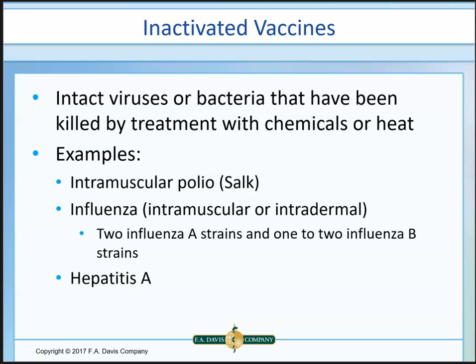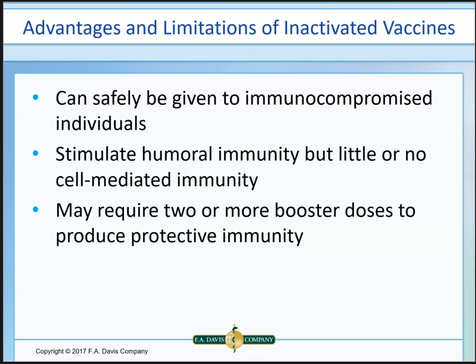Inactivated vaccines use viruses or bacteria that have been killed — typically by heat or chemicals. Examples include the Salk intramuscular polio vaccine, the IM influenza shot, and Hepatitis A. These can be given to immunocompromised individuals since nothing is live. They stimulate humoral immunity but not really cell-mediated immunity. A limitation is that booster shots may be required — multiple doses may be needed to ensure adequate immunity is produced.